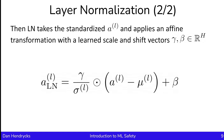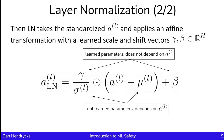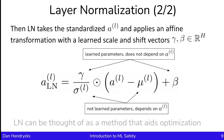That dot notation denotes element-wise multiplication. Gamma and beta are learned parameters and they don't depend on the activations, while sigma and mu are not learned parameters and they depend on the activations. The take-home intuition for layer normalization is simply that it aids optimization — it doesn't make the features more expressive, it just helps optimization proceed more stably.